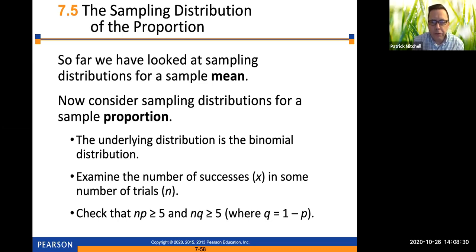The underlying distribution is the binomial distribution. So if we look at the number of successes, which we call x, in some number of trials, which we call n, remember that in order to use the normal approximation to the binomial, you need n times p and n times q to both be at least 5. So we will check that in any problem where we're going to use this.